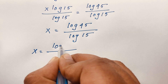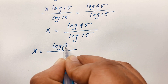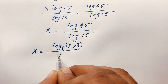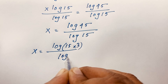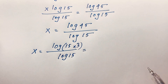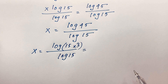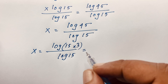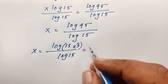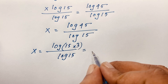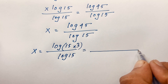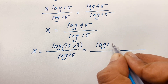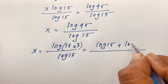Now I evaluate further. I write log 45 as log of 15 times 3, and the denominator remains log 15. According to the logarithm rule, log(ab) equals log a plus log b, so log(15 × 3) becomes log 15 plus log 3.